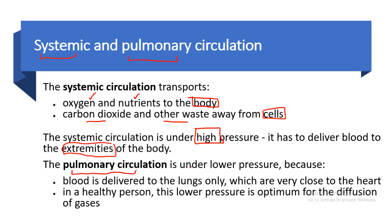The pulmonary circulation is under lower pressure because blood is delivered only to the lungs, which are very close to the heart. In a healthy person, this lower pressure is optimum for the diffusion of gases — carbon dioxide is given to the lungs and oxygen is absorbed into the blood. So systemic circulation is under high pressure and pulmonary circulation is under low pressure.